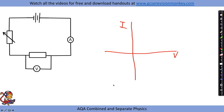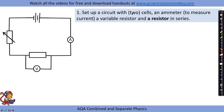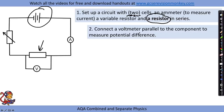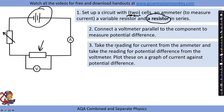Our end goal is to draw a graph of current against potential difference. We set up the circuit with cells, an ammeter, a variable resistor, and a resistor in series as the component. We connect a voltmeter in parallel to the component to measure potential difference. We take the current reading from the ammeter and the potential difference reading from the voltmeter, and plot these on a graph — or record them in a table first and plot later.